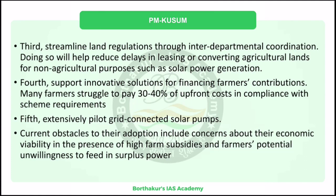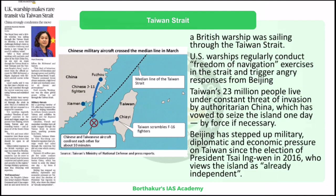Moving on to the next article: US warship makes rare transit via Taiwan Strait. The US Navy regularly conducts freedom of navigation operations in the South China Sea and Taiwan Strait, but for the first time a British warship conducted similar operations in the Taiwan Strait. The Taiwan Strait has been the focus of China-Taiwan tensions, with multiple recent incursions by the Chinese Air Force into Taiwanese airspace, including fighter jets and bombers.